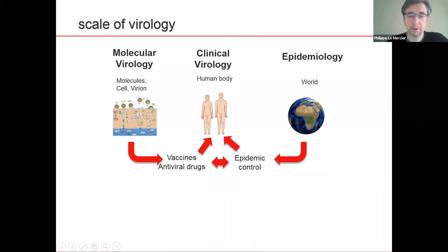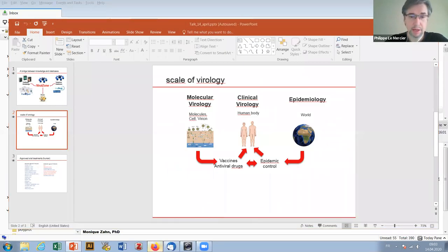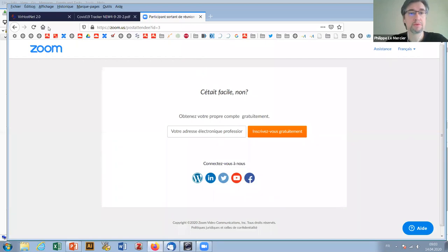These three scales are working together to prevent infectious disease. You will find the implication for antiviral drugs, for example, which can be effective in molecular biology in cells, but not in clinical and so on.